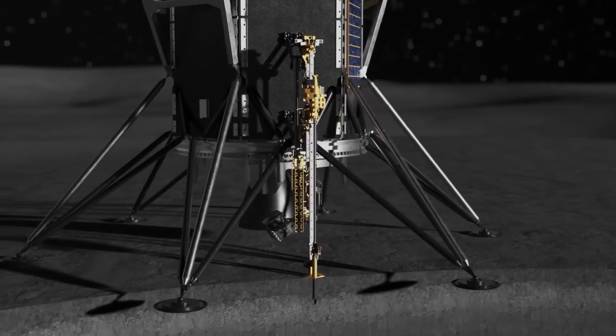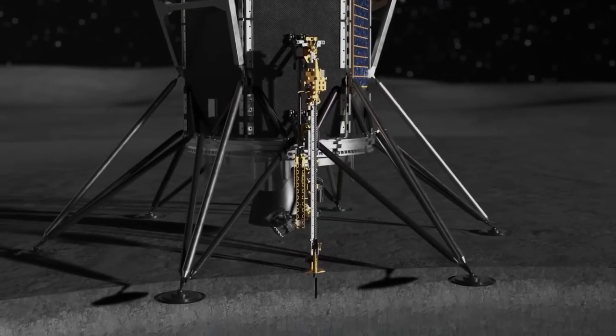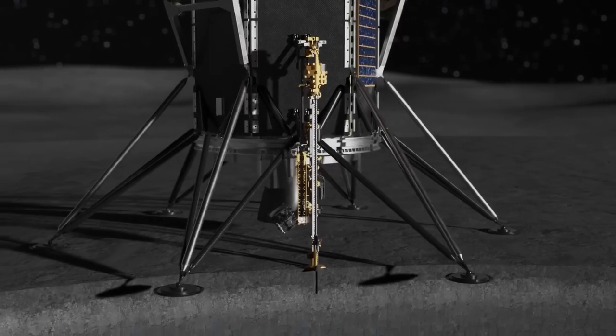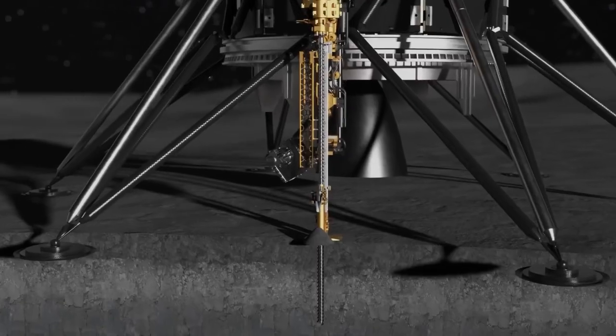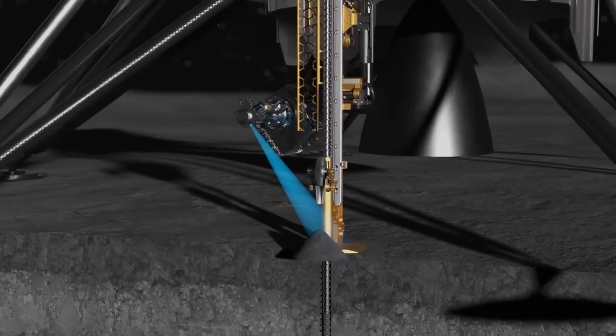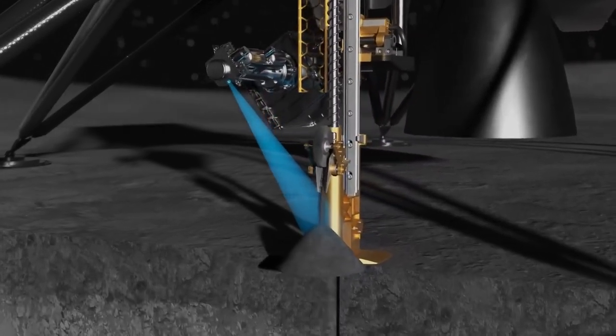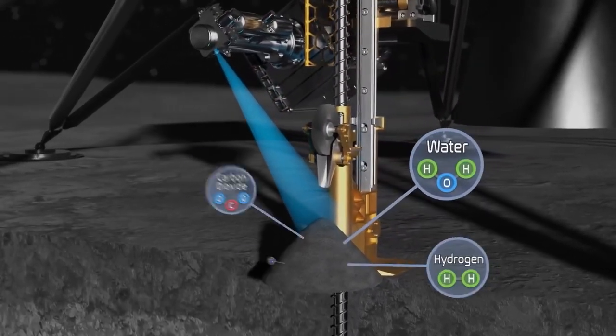Triton will drill into the lunar surface, taking one small bite deeper into the soil at a time and bringing that sample up and depositing it on the lunar surface. MSOLO will then evaluate those samples as they arrive on the surface to identify and measure the composition of water and other volatiles emanating from the samples.